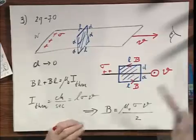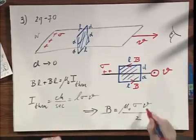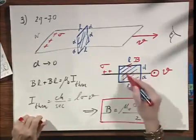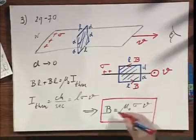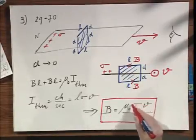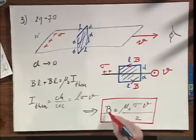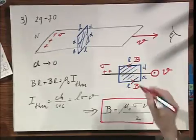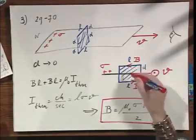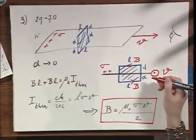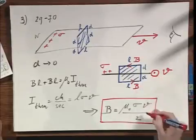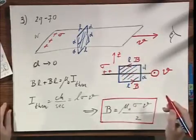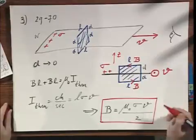Notice the faster the belt moves, the higher the current through this surface, the higher the magnetic field. The higher the surface charge density, the higher the magnetic field. Notice also it's the same on both sides — there is no dependence on z.